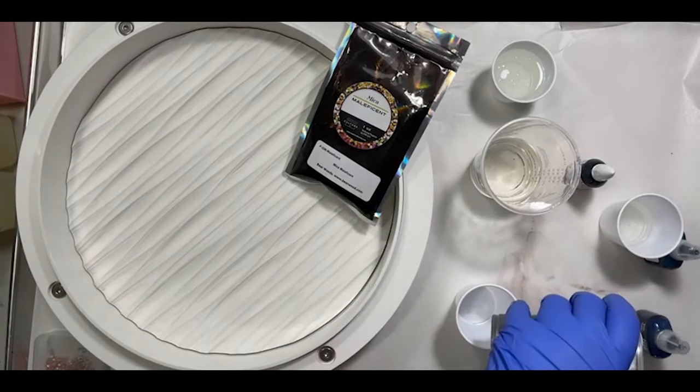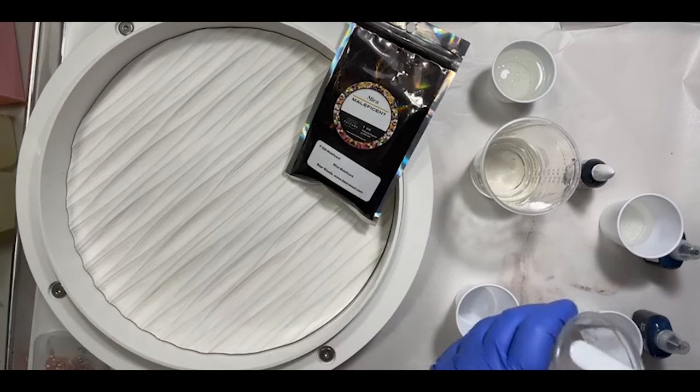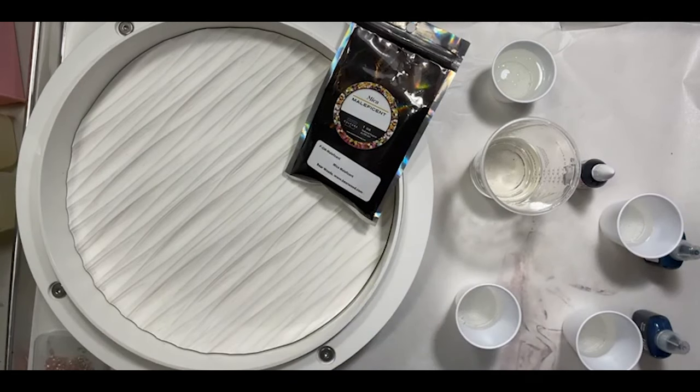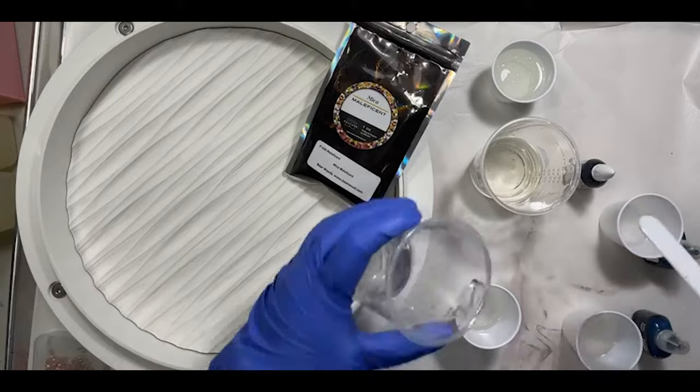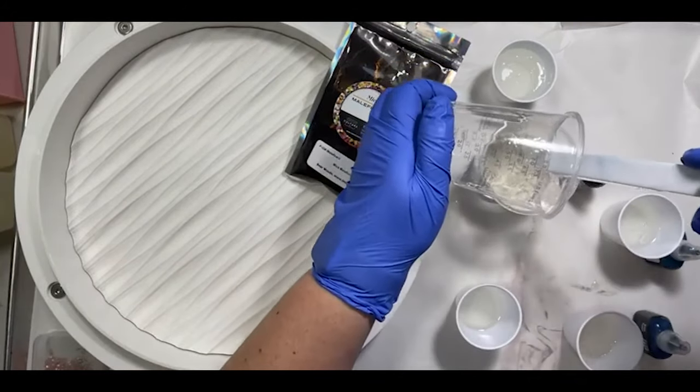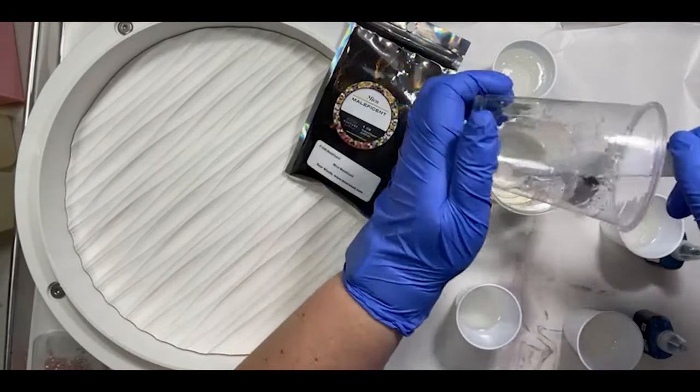I'm going to do about an ounce in each of these cups for the alcohol inks and the mica. On this gold mica I'm just going to drizzle a little bit. I'm going to use some more tomorrow with the sand, but I do want a little bit in the top part.